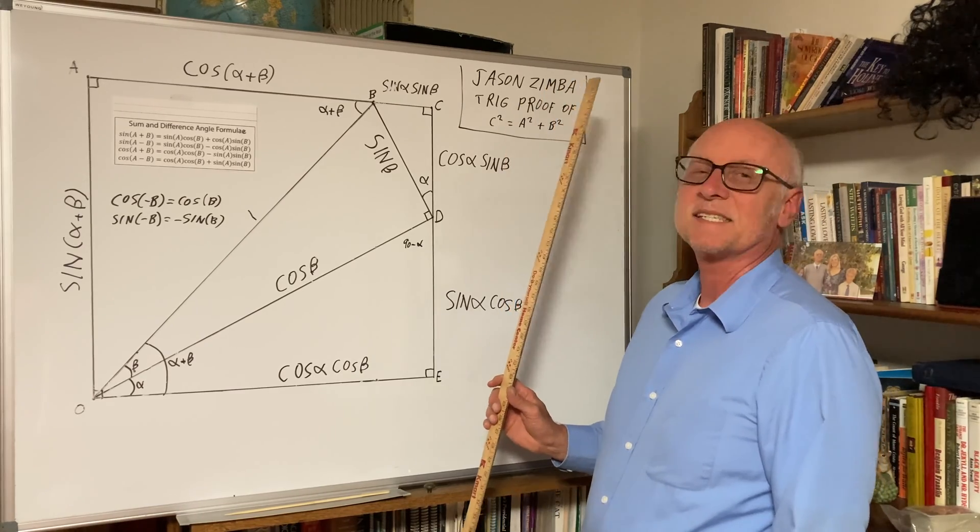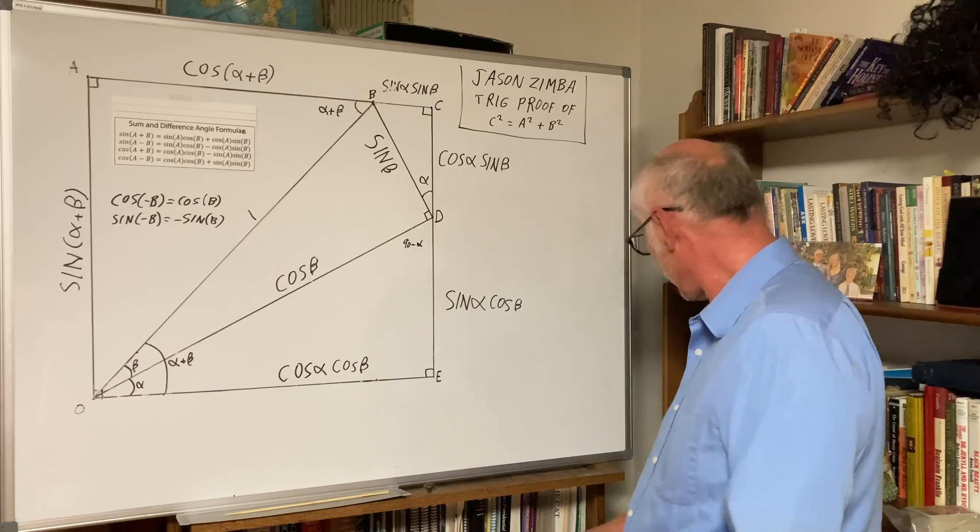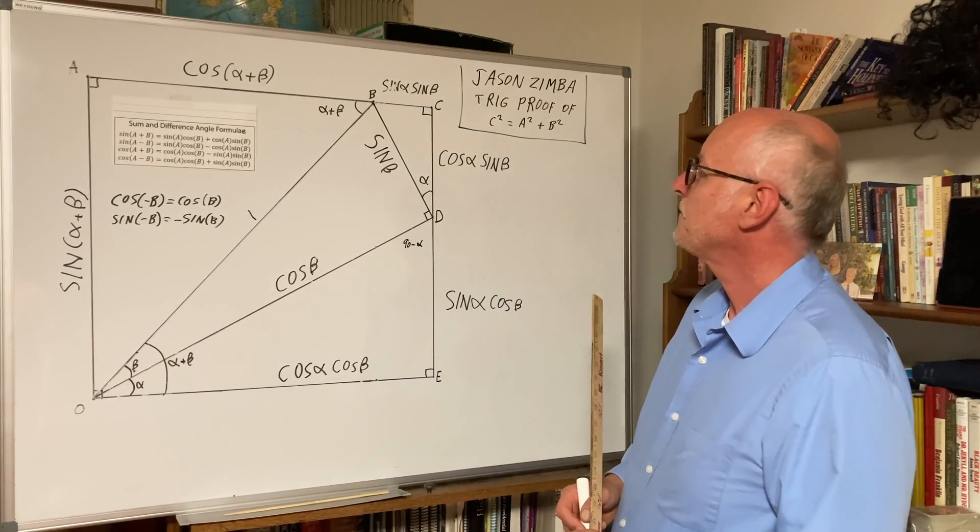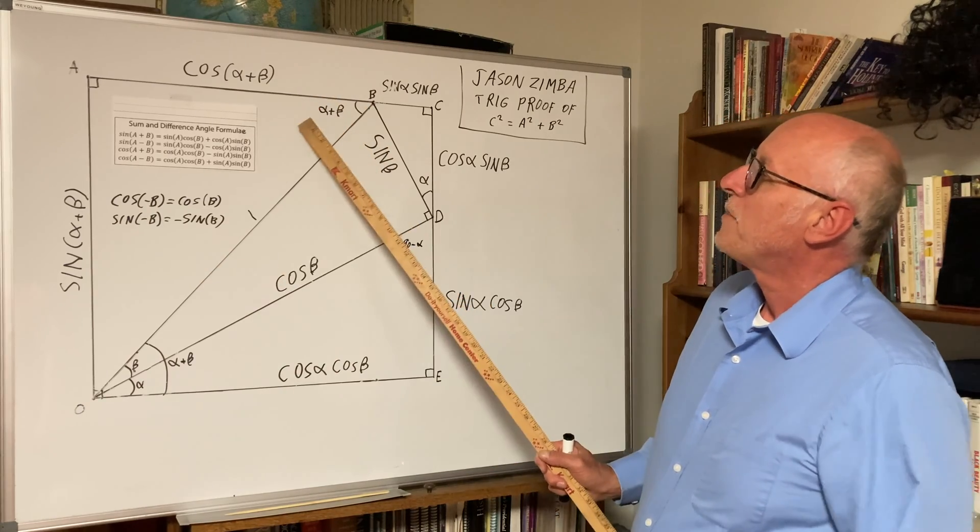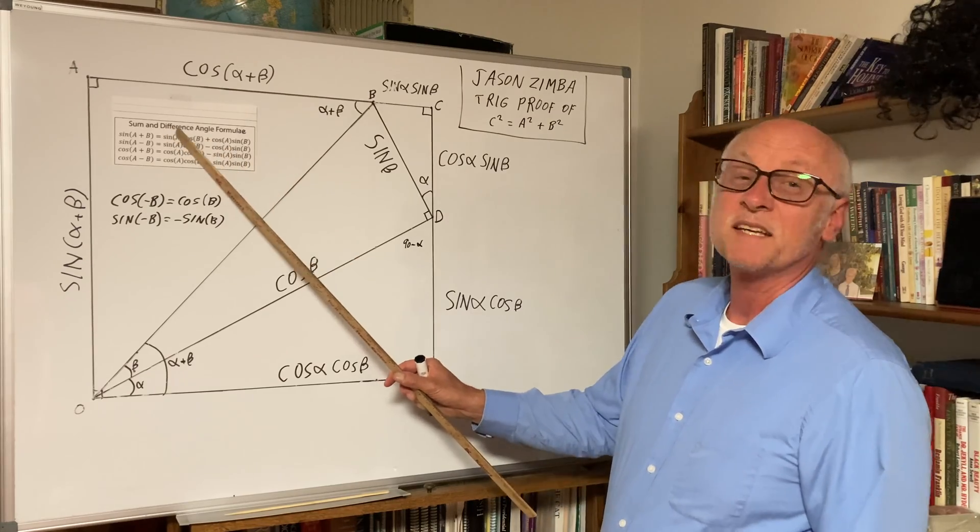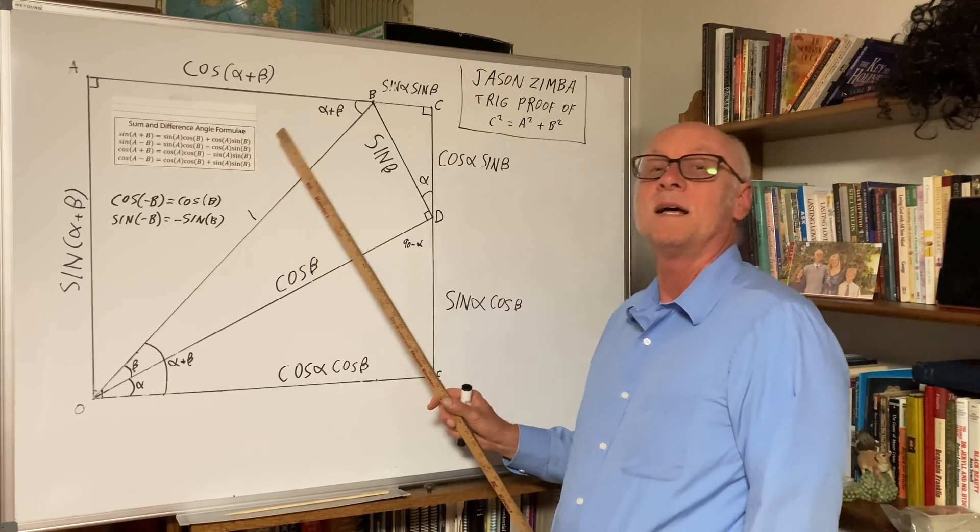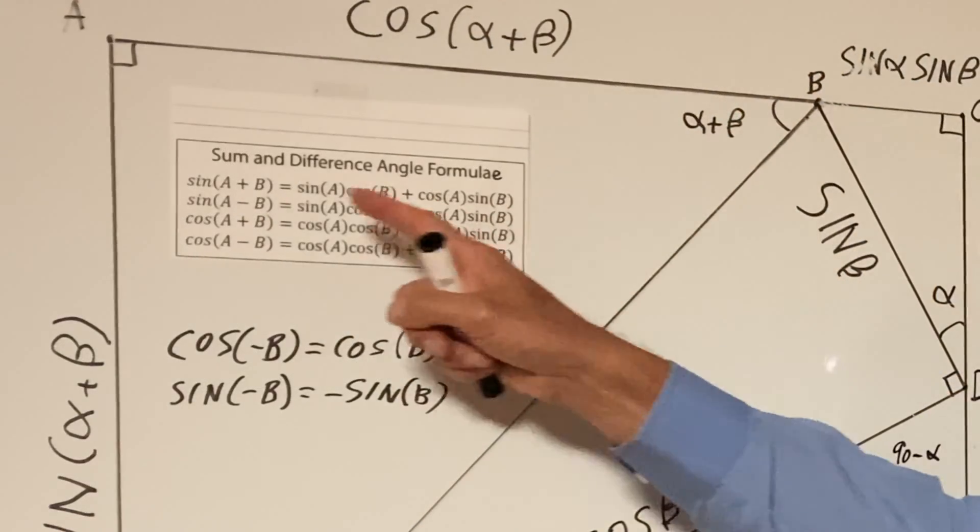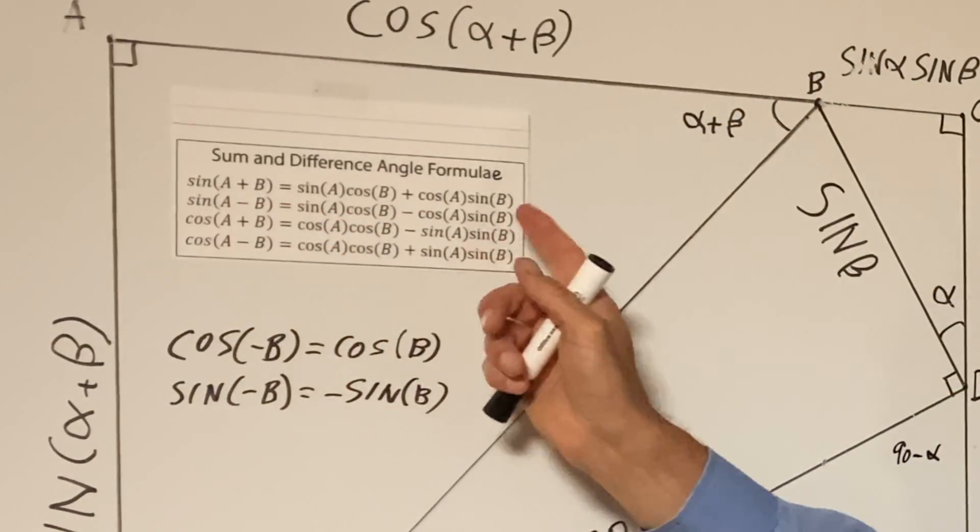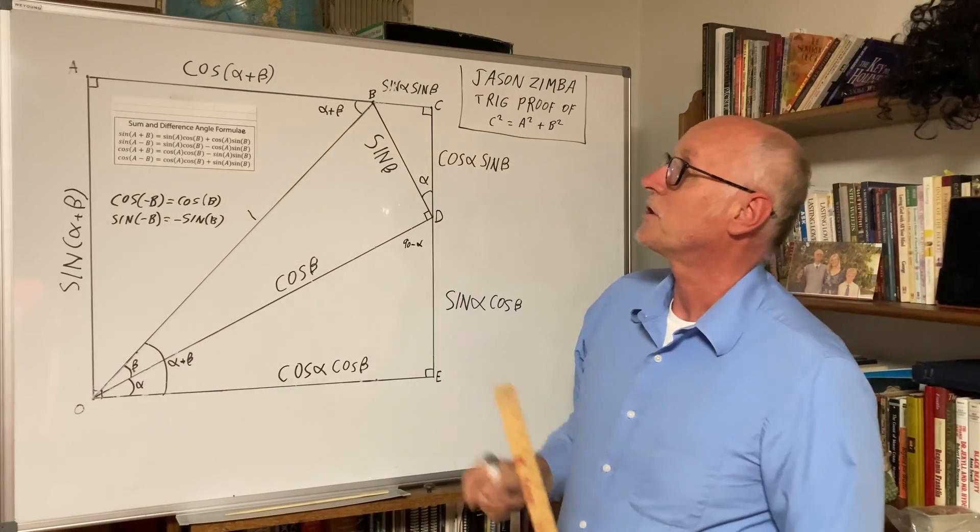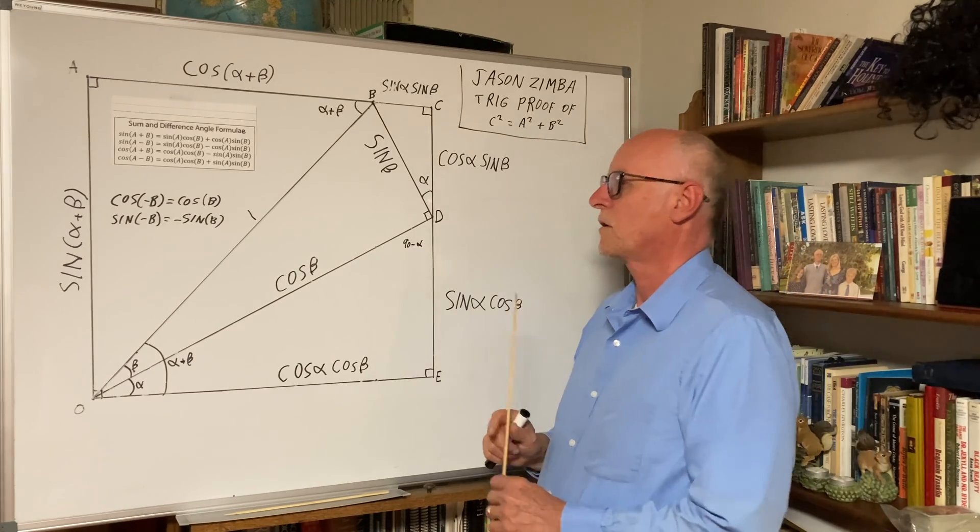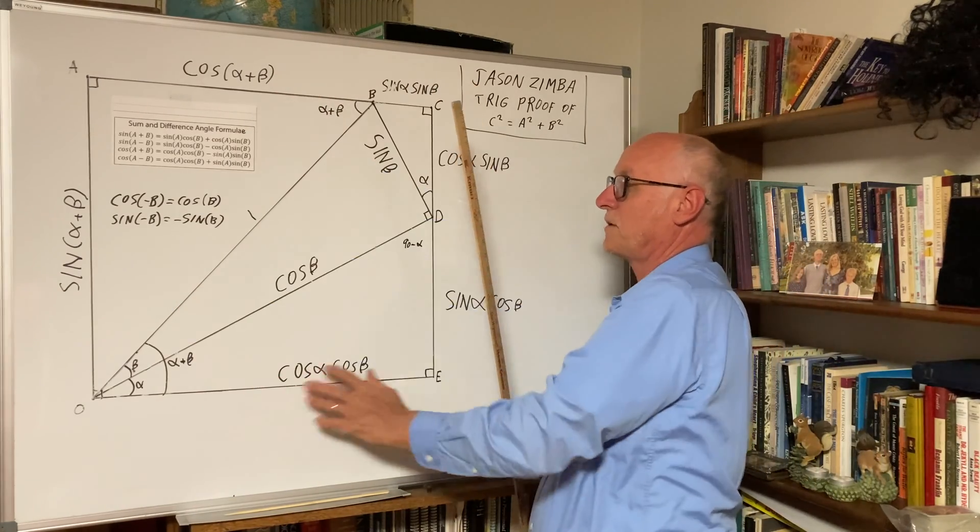Jason Zimba. And before we do the proof, basically what we needed to do was to prove the sum and difference angle formula, particularly the sine A minus B and the cosine A minus B. Those are used heavily by Jason Zimba, and we did that in my previous videos, so I'm not going to do it, but this is the setup that we used.